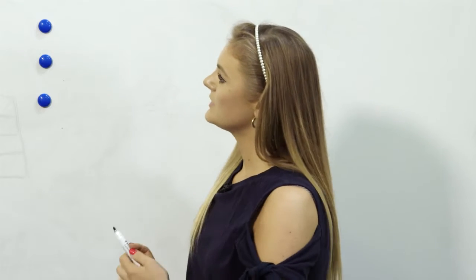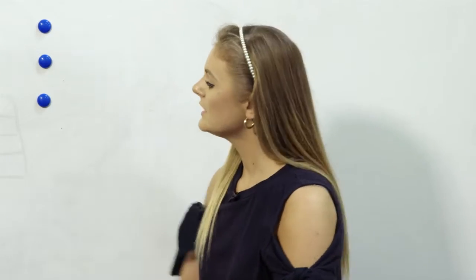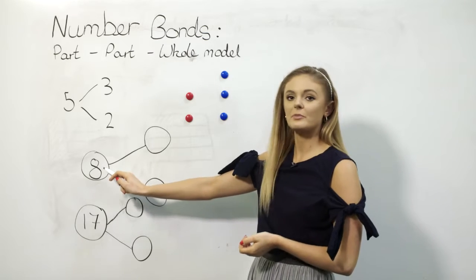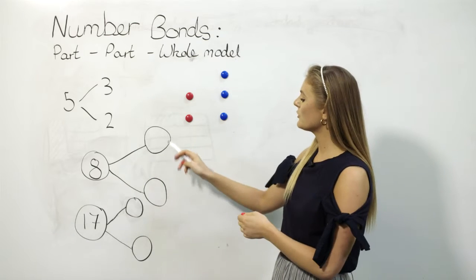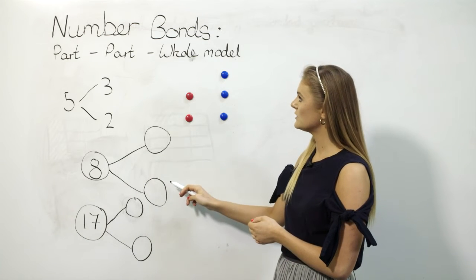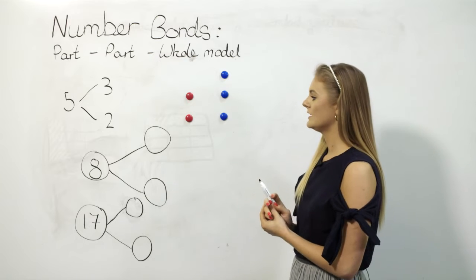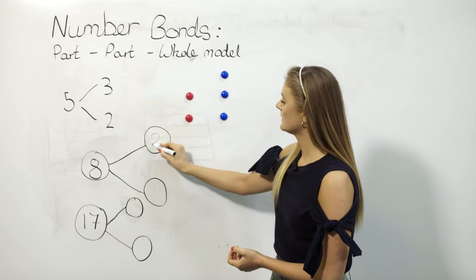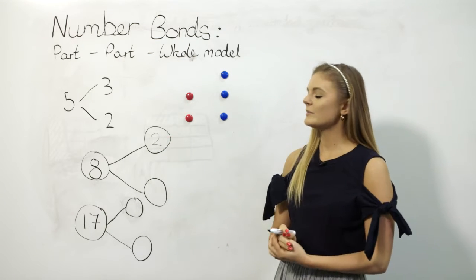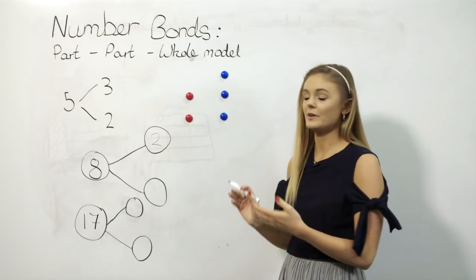Once they're confident using concrete resources, we can move on to representing their work pictorially using that part-part-whole model. Here I've got 8 to represent the whole, and we've got two bubbles in which the two parts are represented. If I've got 2 in the top one, that means we'd have to have 6 to equal the whole of 8.